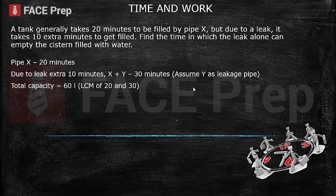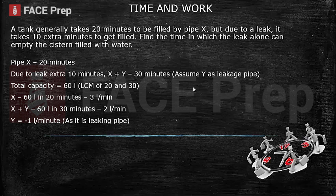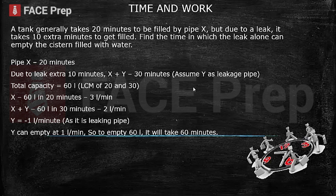Total capacity by the chocolate method is the LCM of 20 and 30 minutes, which is 60 liters. Pipe X fills 60 liters in 20 minutes, so its efficiency is 3 liters per minute. Pipe X and leakage pipe Y together fill 60 liters in 30 minutes, that is 2 liters per minute. Solving the equation, Y's efficiency is 1 liter per minute, but we put a negative sign since Y is a leaking pipe. Y empties at 1 liter per minute, so to empty the full 60 liters it will take 60 minutes.